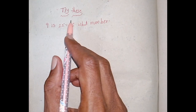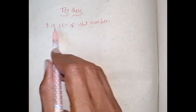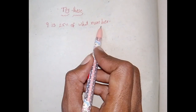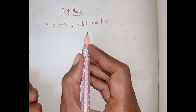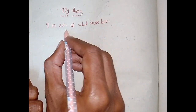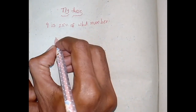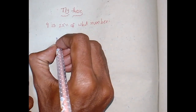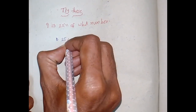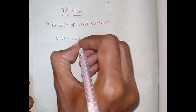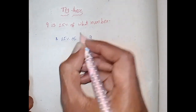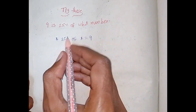In 7th class, 7th chapter, try this problem: 9 is 25% of what number. So 25% of what number — we have to find out that number. So 25% of x is equal to 9. 'Of' means multiplication.